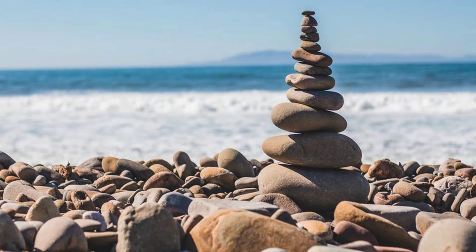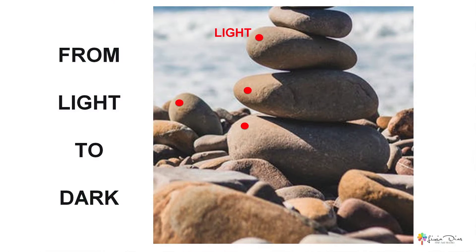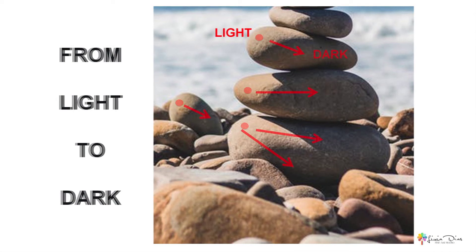Round objects like these rocks, for instance, look rounded because there is light shining on them, which changes the actual color into different shades from light to dark. A rounded rock like this will appear lighter as its surface gets closer to the light source and darker as it moves away from it. In landscape painting, understanding tonal values is like unlocking the secrets of creating depth and form in your artwork.